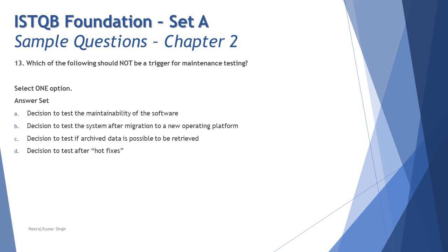Option A: a decision to test the maintainability of the software. Deciding to check for maintainability is completely different and has nothing to do with triggering maintenance testing. If you maintain, then you do maintenance testing, but merely deciding on it does not trigger maintenance testing. Even if you're sure, check all remaining options to be double sure.